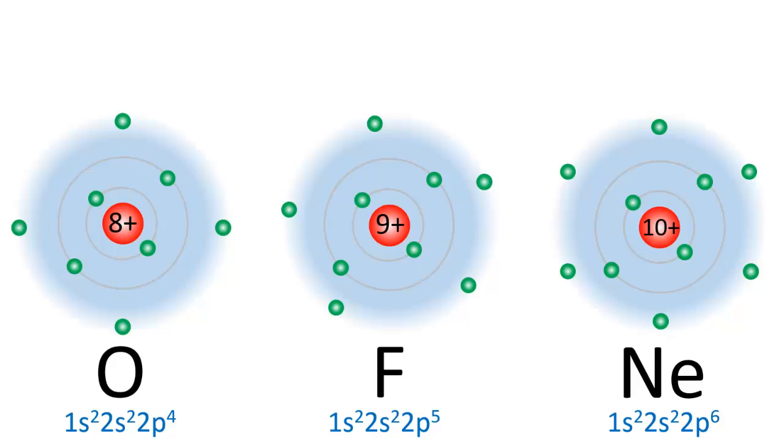So we've just seen that core electrons shield the valence electrons from the full positive charge of the nucleus. It's also important to understand that valence electrons do not provide shielding to one another — they can only be shielded by core electrons. Let's calculate the effective nuclear charges for the valence electrons of the last three elements in the second period: oxygen, fluorine, and neon.